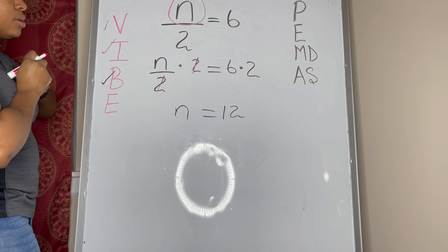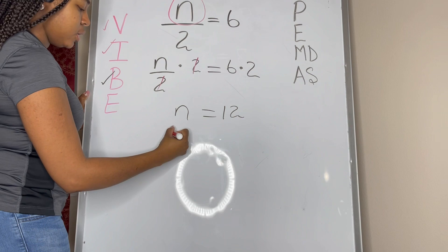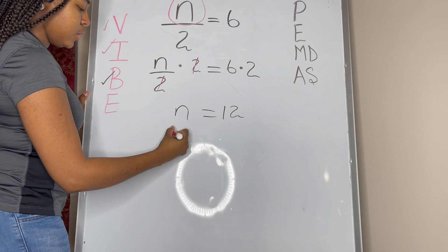Now we can check using substitution to see if our answer is correct. So n is equal to 12. If we put that into our original equation, we'll have 12 divided by 2, and that is equal to 6. So we know that our solution is correct.